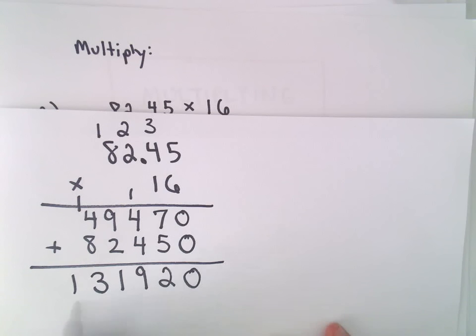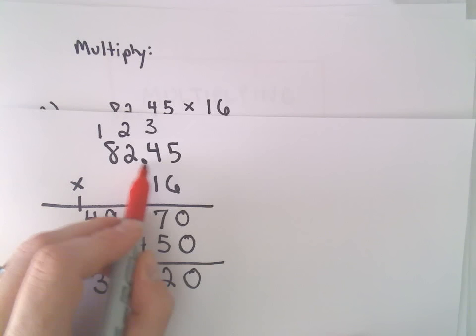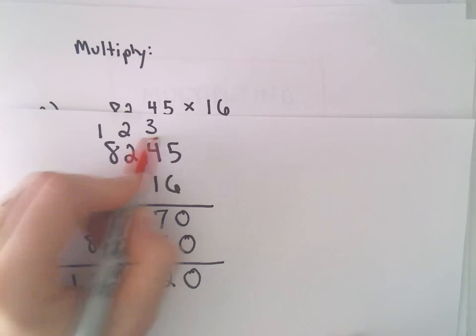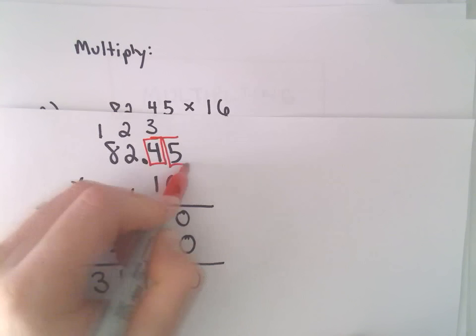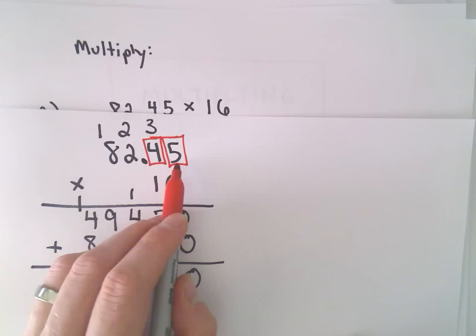And now it's just a matter of finding where the decimal place goes. I basically look to the right of my decimal sign in each number, and I count the number of digits. So in our first number, there's two digits to the right.